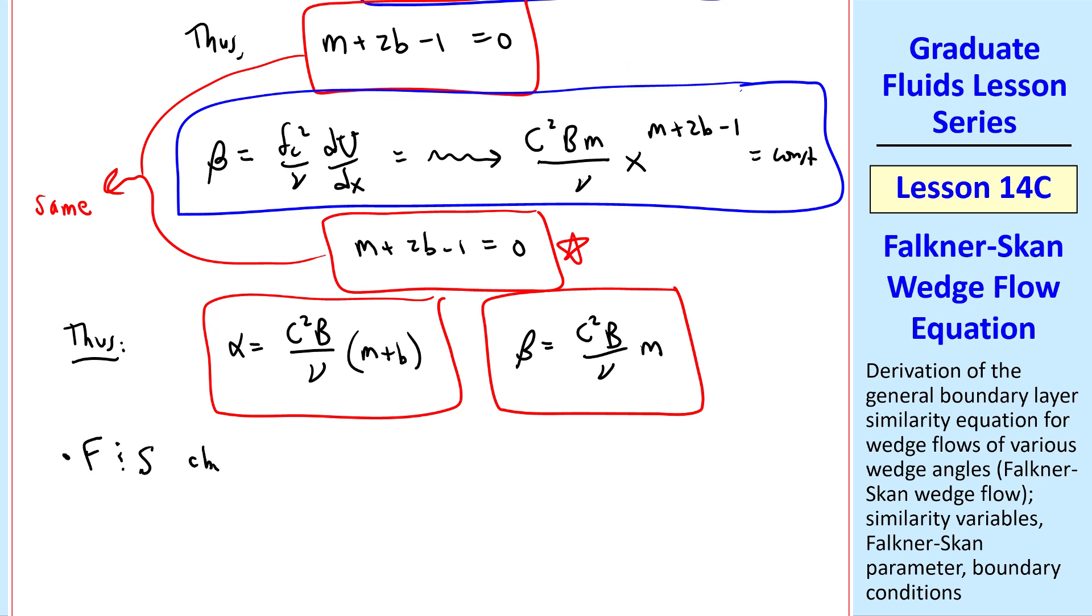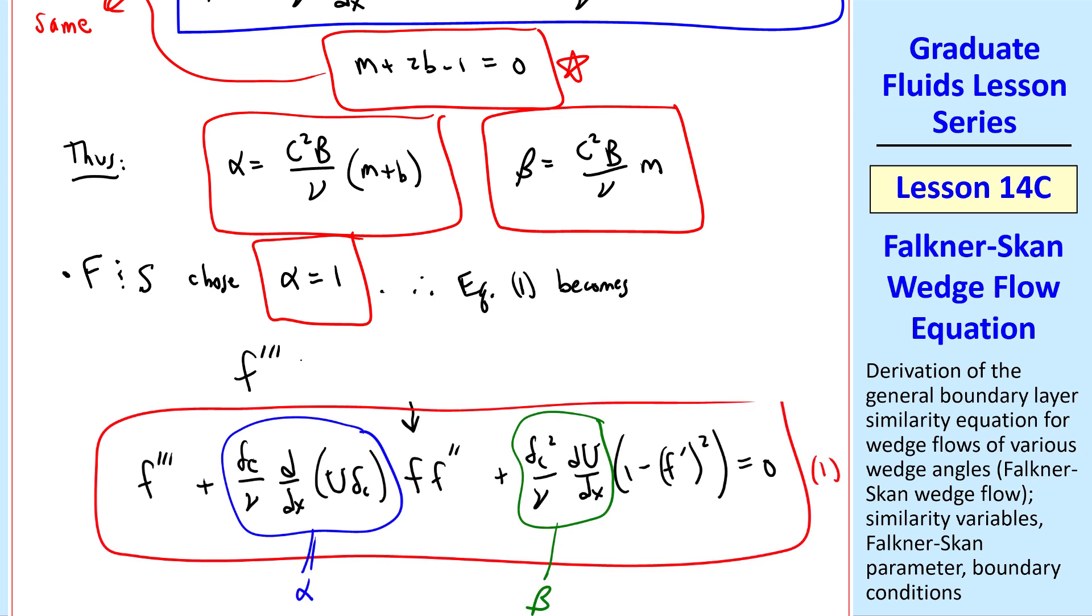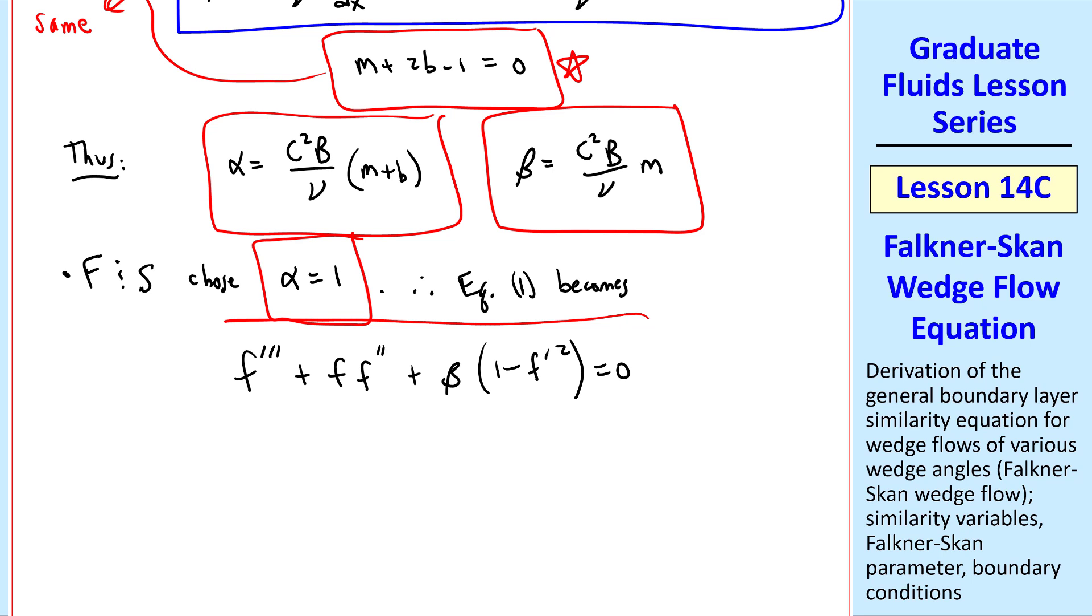Well, Falkner and Skan chose alpha equal 1. And then our equation 1 becomes f triple prime plus f f double prime plus beta 1 minus f prime squared equals 0. And I'll call this equation 2. This is the Falkner-Skan boundary layer similarity equation.